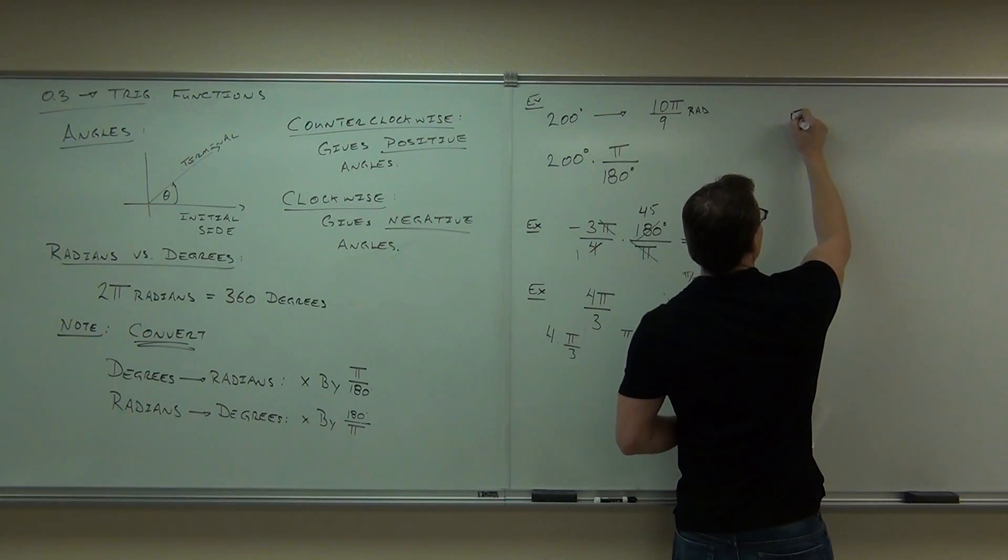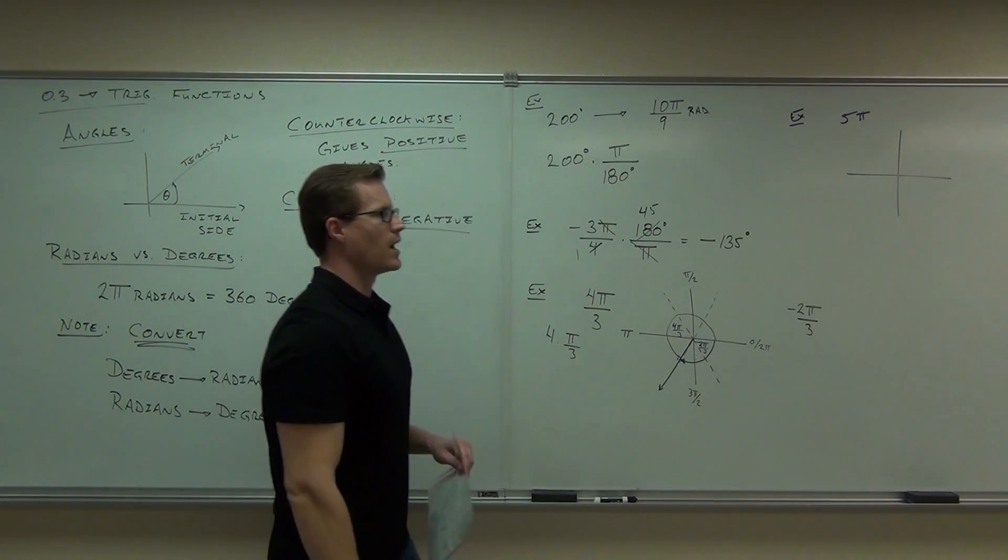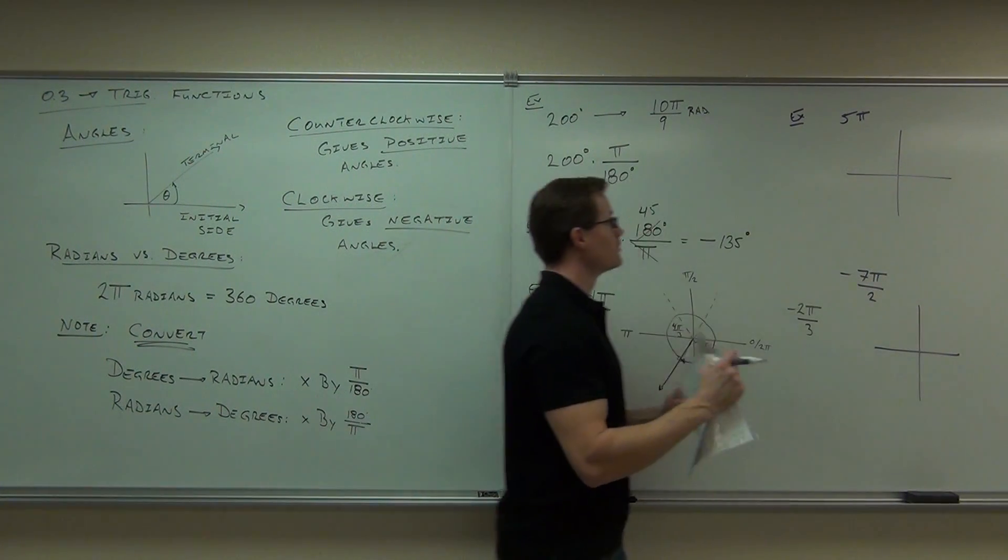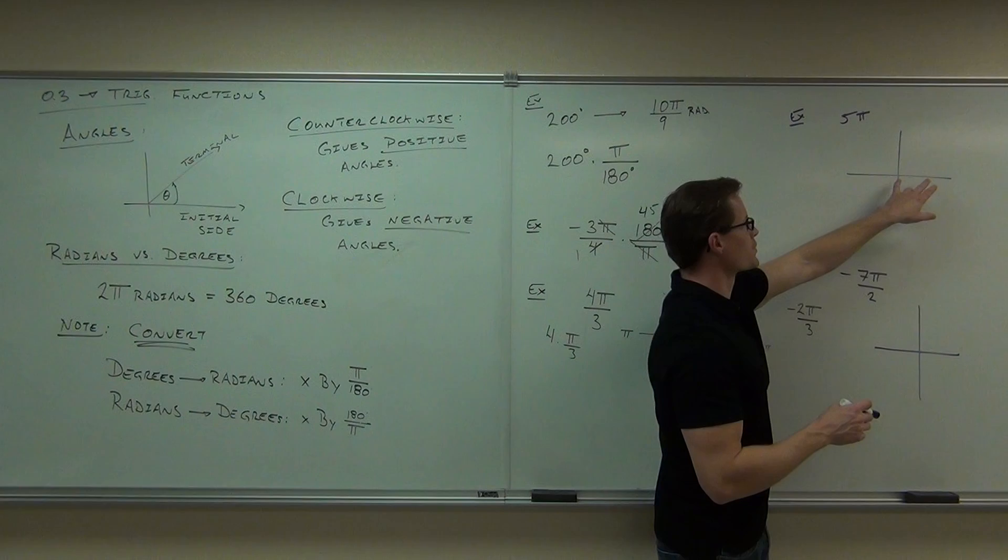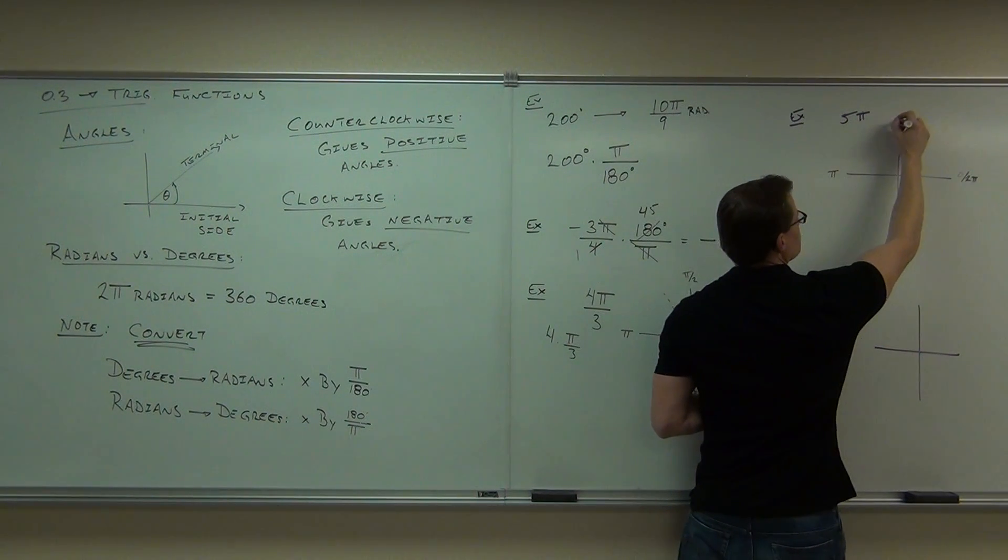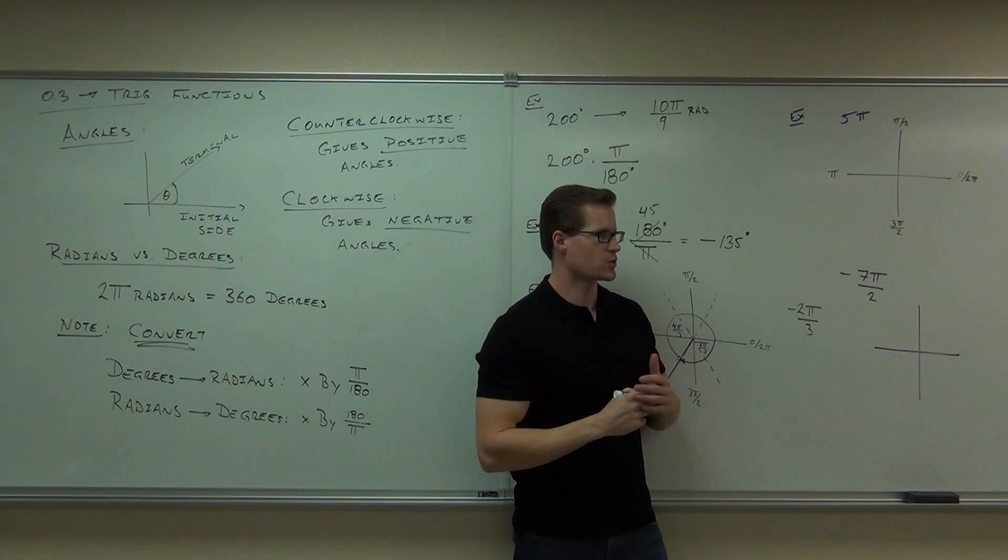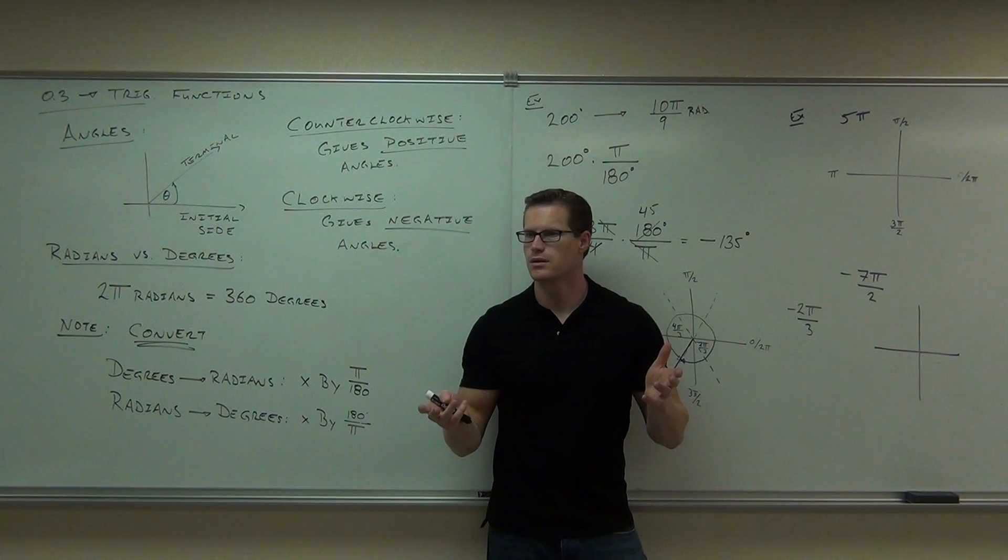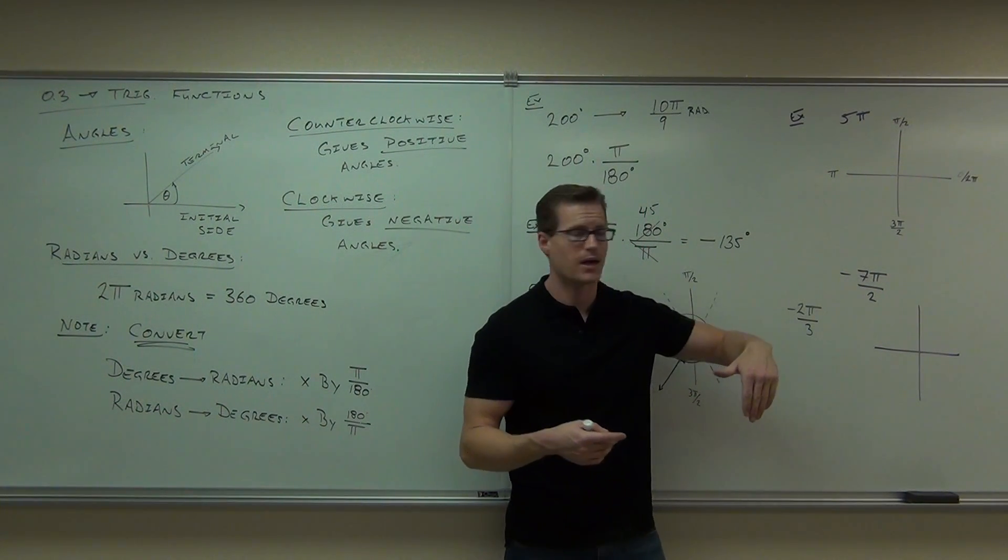How about we graph two more. Let's graph 5 pi, then we'll graph negative 7 pi over 2. So 5 pi, of course we're going to start with our typical initial side, that's our zero angle or 2 pi angle marker. We've got pi here, pi over 2, and 3 pi over 2. Why don't you try the 5 pi? Start at your initial side. Are you going to go clockwise or counterclockwise? Counterclockwise. So go ahead and do that. Count however many pi's you have. Now, we don't have to break this up at all because there's no denominator, so we're actually counting 5 pi's. Let's go ahead and do that. How many times around am I going to go?